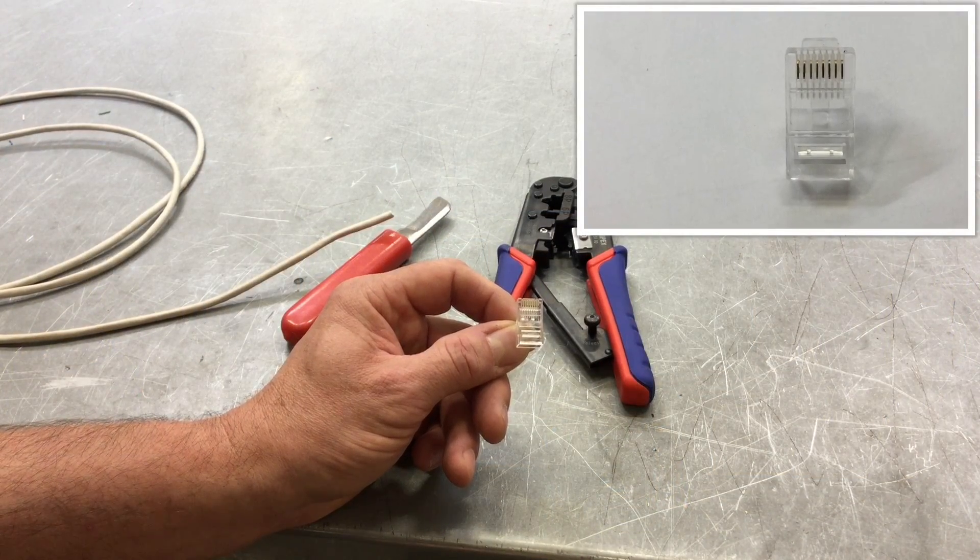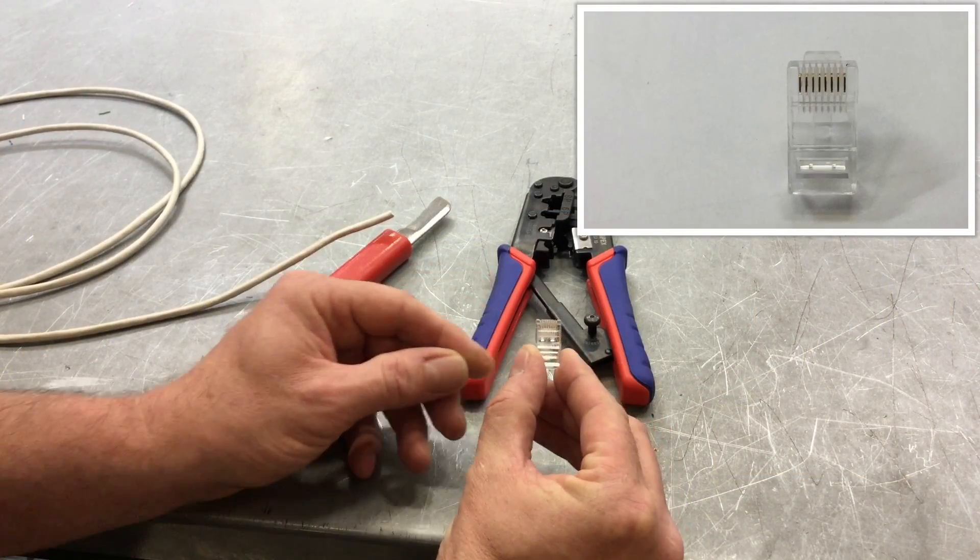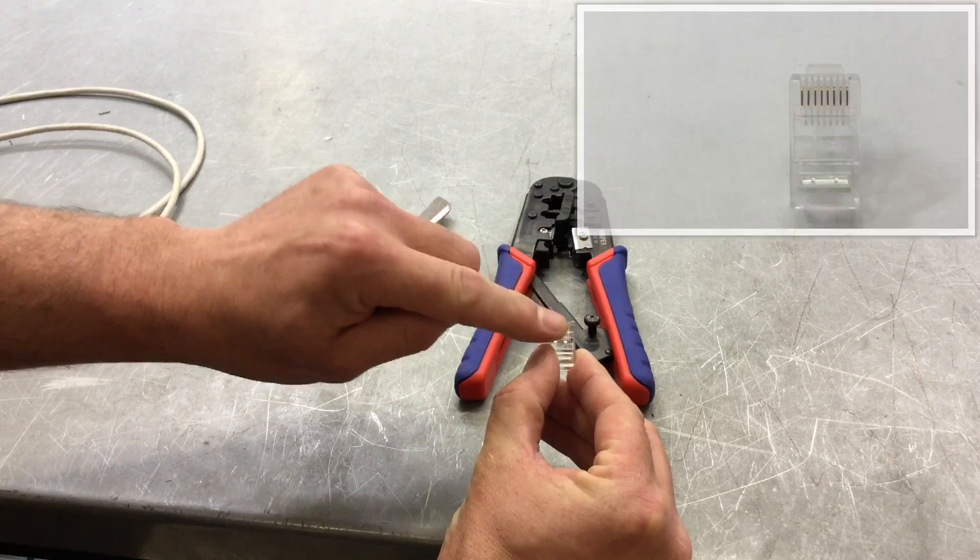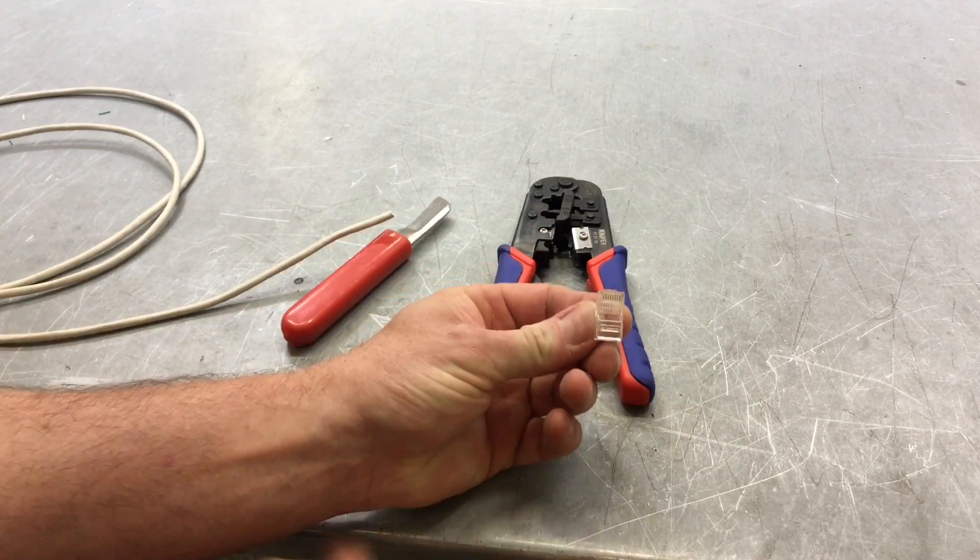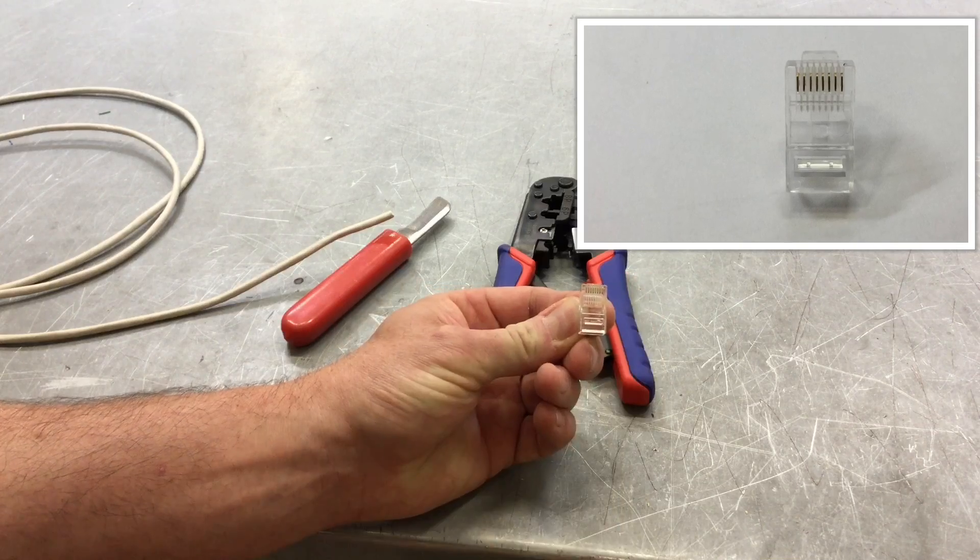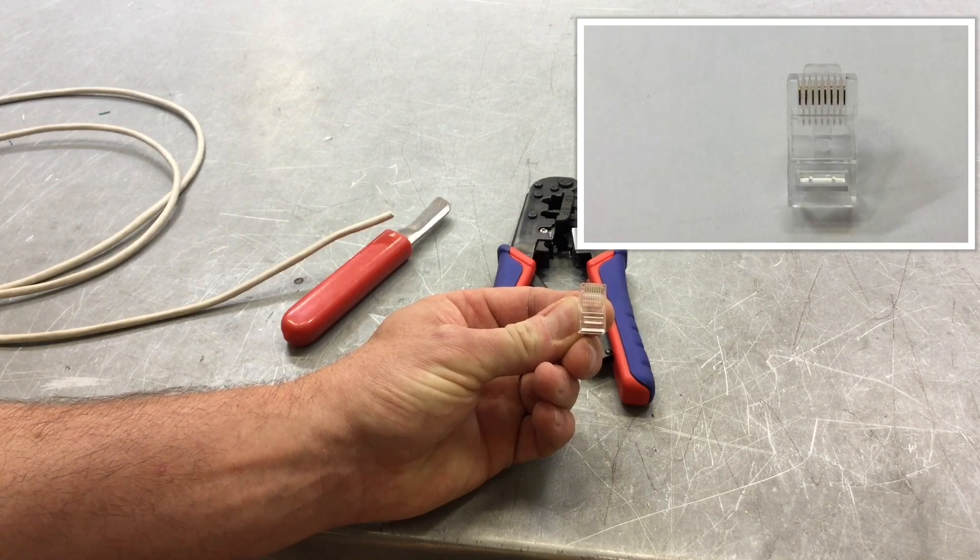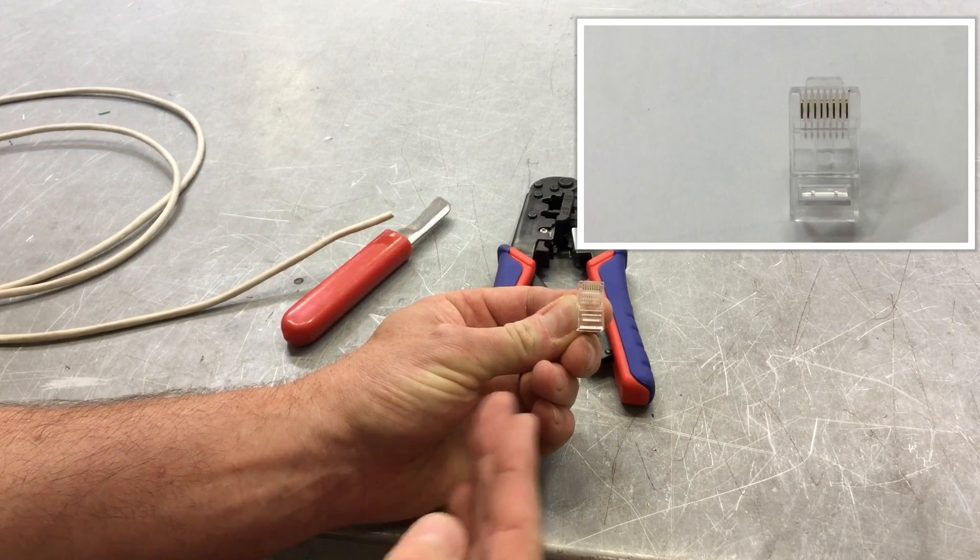To make off the RJ45 end first, it's imperative that we keep it up the correct way. So where we can see the gold color connections, and then we've got the clip on the back, we're always going to have it that way round so we can see the gold connections, the eight connections that we're going to insert our cables into.